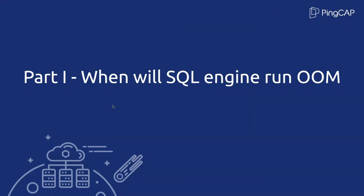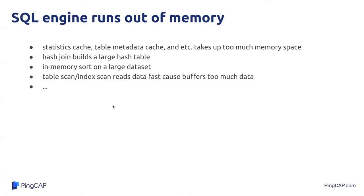I'd like to look at when the SQL Engine will OOM. We may encounter the SQL Engine OOM in the following situations. When the cache of statistics or the table metadata takes up too much memory space, we may encounter an OOM risk easily because of the lack of memory space for calculation. When a query executes a hash join and builds a large hash table, or when a query executes an in-memory sort on a large dataset, OOM may happen too. When the table scan reads data faster than the consumer operator upon it, the table scan may buffer too much data and thus cause SQL Engine OOM.